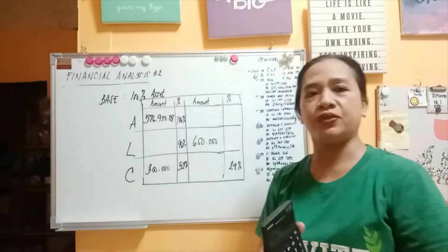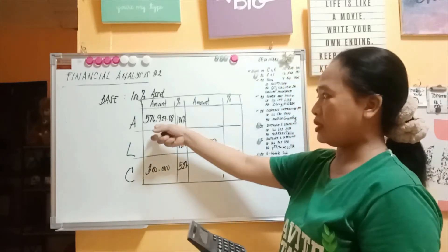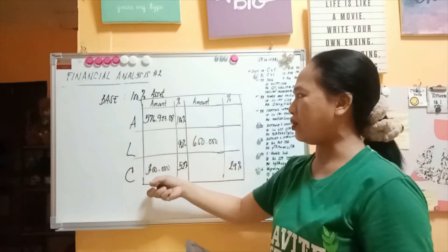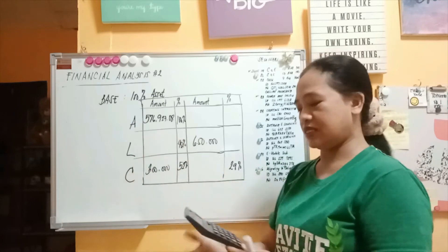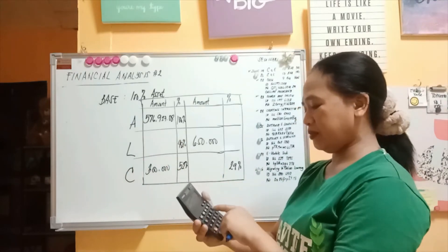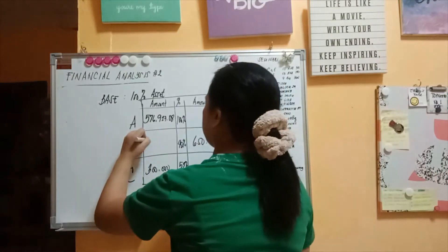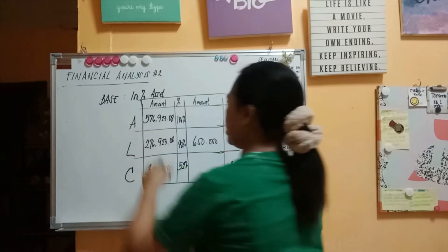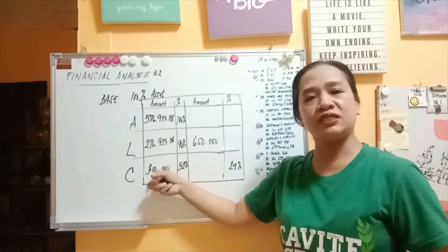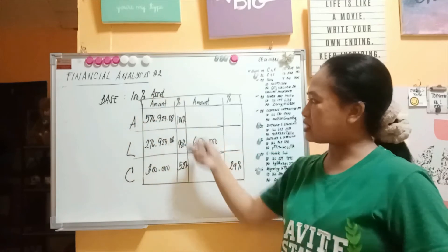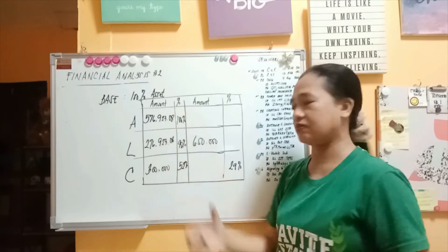You can verify this answer. Since we now have the asset amount of 576,923.08, multiply it by 48% to get liabilities: 576,923.08 × 48% = 276,923.08. Then 576,923.08 minus 276,923.08 gives capital of 300,000, confirming the answer. You can compute side by side as long as you know the base percentage, which is asset at 100%.